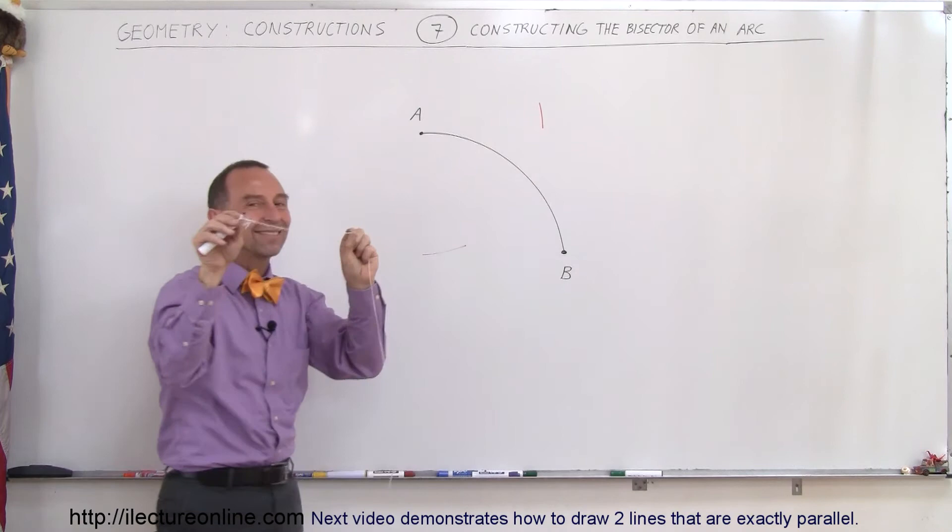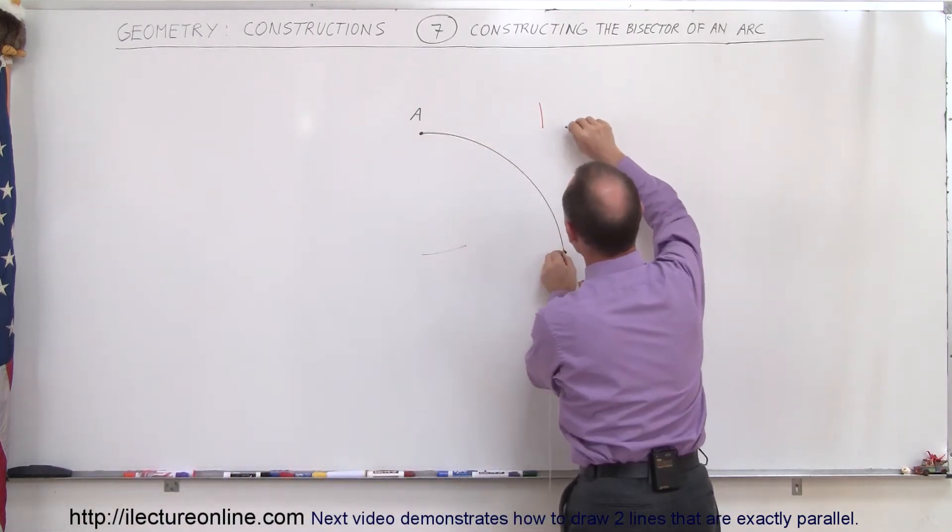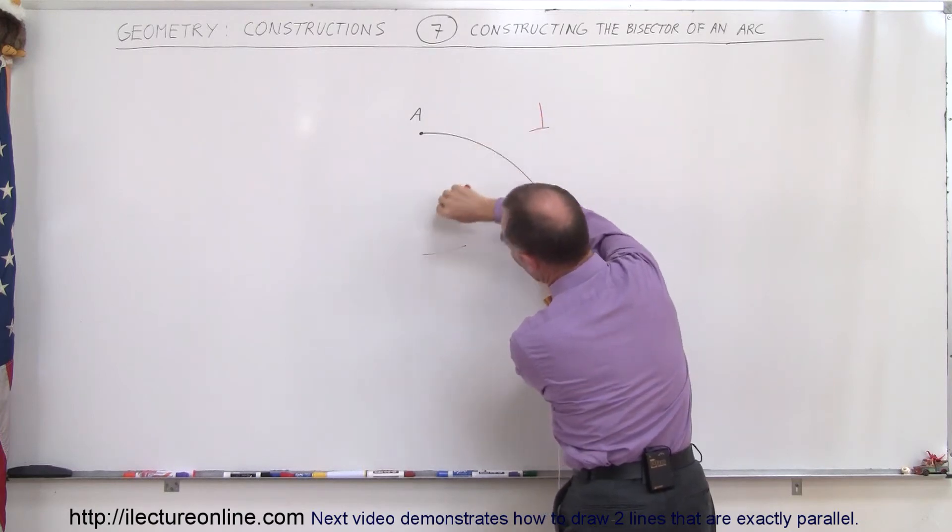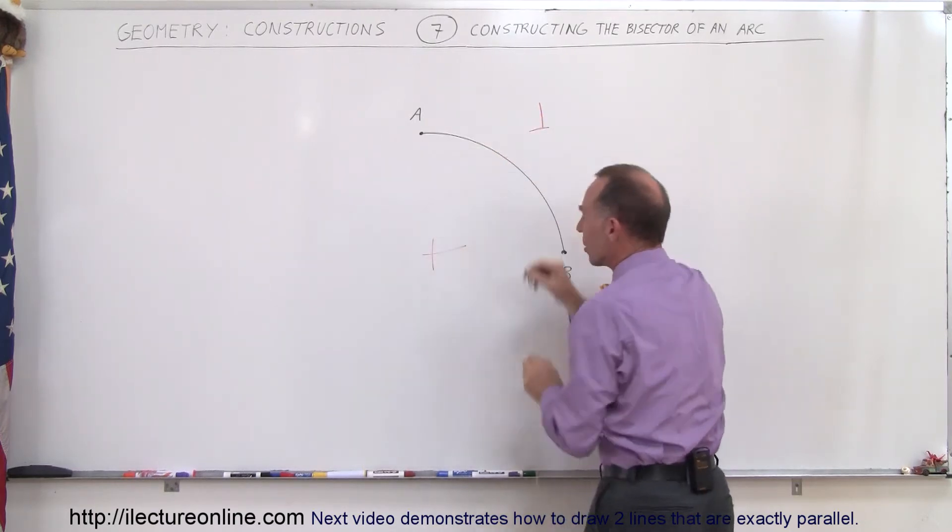Then you keep the exact same length. You go to the other point, point B, and you draw a little line across. And so they almost don't cross. Come over here, draw a little line. All right, there you go.